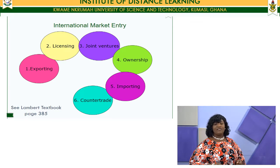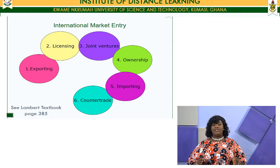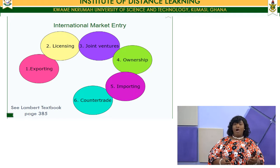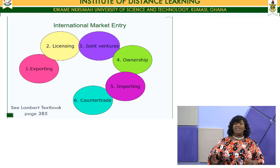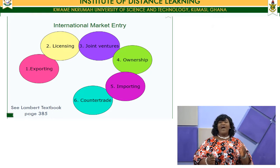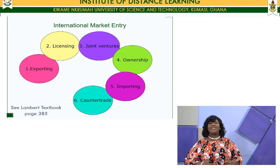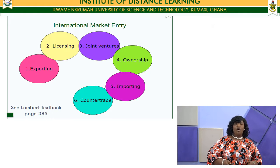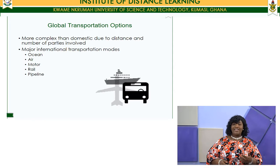In a countertrade agreement, different countries or organizations go into an agreement to exchange goods — not with money, but with other goods, though the valuation is done in real currency terms. A typical example is the barter system. This is usually done at the government level, but it is also possible for organizations to exchange goods of the same or relative value.